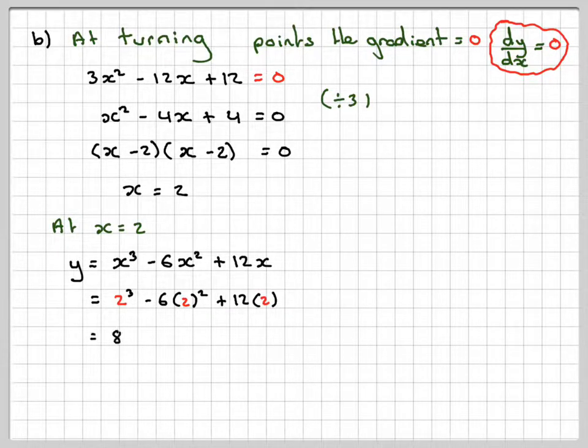2 cubed is 8. 6 times 2 squared, so that's 6 times 4, which is minus 24. Don't forget the sign. And here we get plus 24. So these two cancel out. We're left with 8.